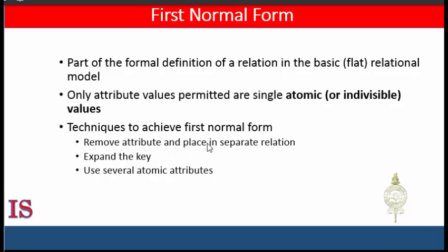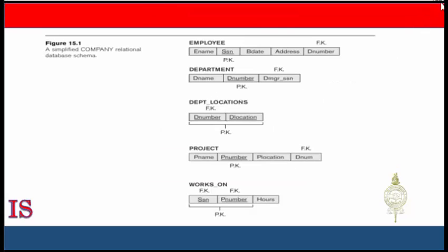There are several techniques to achieve this. First, remove the attribute and place it in a separate relation. Second, expand the key — add an attribute to the key in order to have one child per tuple. Third, use several atomic attributes, for example child one, child two, and child three, if you decide three is sufficient. Of course, some edge cases may require more.